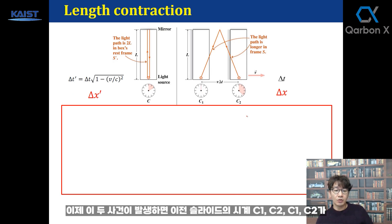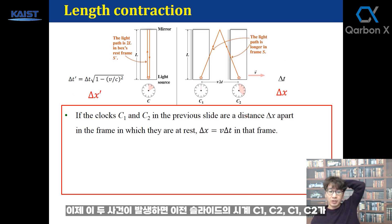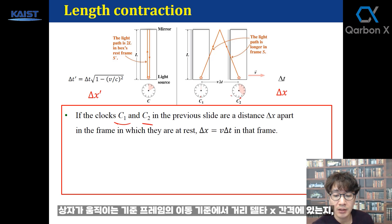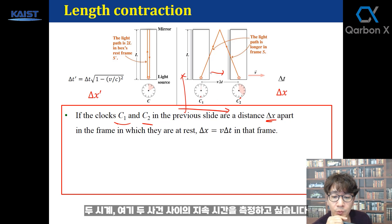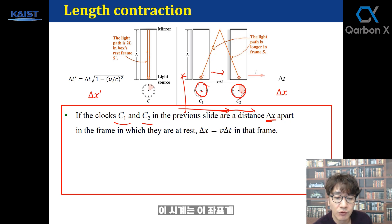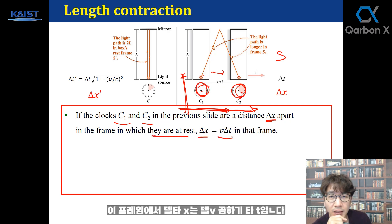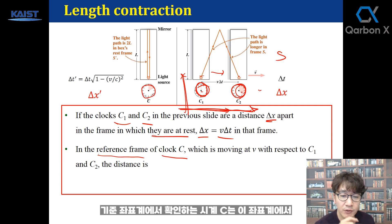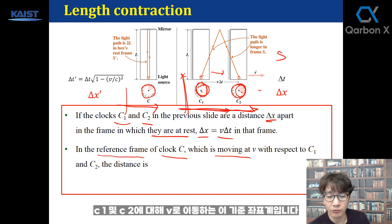Now think about length. We want to measure the distance delta x between two clocks C1 and C2. In the moving reference frame — the frame where the box moves — the two clocks are at rest with respect to that frame, and delta x equals v times delta t. In the reference frame of clock C, which is moving at v with respect to C1 and C2, we want to measure the distance between the two clocks, delta x.